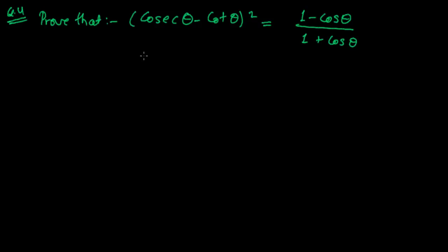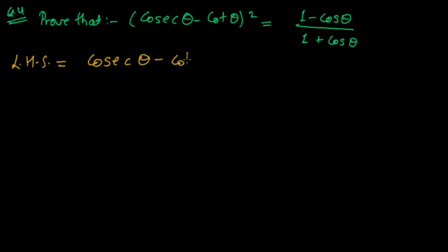Hi, this is another problem in trigonometric identity. In this problem we have to prove the left hand side with the right hand side. Our left hand side is cosec theta minus cot theta whole square, and we have to equate this with the right hand side: 1 minus cos theta upon 1 plus cos theta. So let me write first our left hand side.